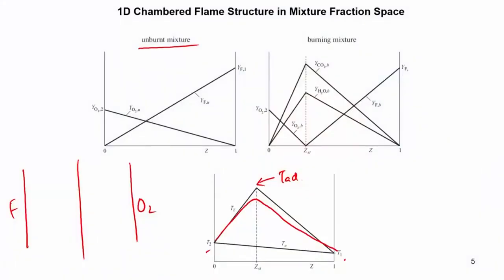From the 1D flame pictures we find that mixture fraction acts like an independent variable in the framework of the 1D chambered flame. You can write mass fraction, temperature, and other scalars as functions of the mixture fraction. If you know at a point that Z has a particular value and the point is burning, then you know the temperature at that point is the adiabatic flame temperature. So Z gives you a map of different reactive scalars.